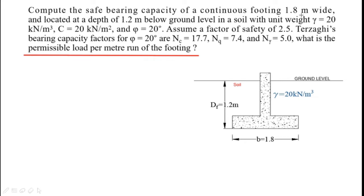The statement is given in front of you: compute the safe bearing capacity of a continuous footing 1.8 m wide, located at a depth of 1.2 m below ground level in a soil with unit weight γ = 20 kN/m³, C = 20 kN/m², and φ = 20°. The corresponding bearing capacity factors are Nc = 17.7, Nq = 7.4, and Nγ = 5.0. In addition to determination of safe bearing capacity, we also have to determine permissible load per meter run of the footing.